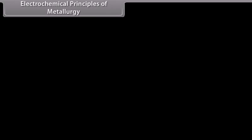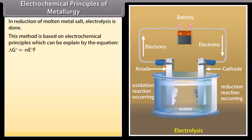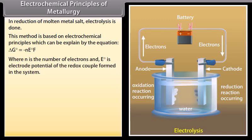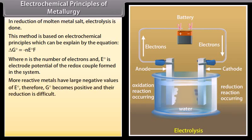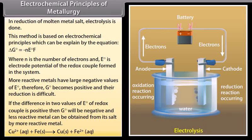Electrochemical principles of metallurgy. In reduction of molten metal salt, electrolysis is done. This method is based on electrochemical principles which can be explained by the equation ΔG° = -nE°F, where n is the number of electrons and E° is electrode potential of the redox couple formed in the system. More reactive metals have large negative values of E°. Therefore, G° becomes positive and their reduction is difficult. If the difference in two values of E° of redox couple is positive, then G° will be negative and less reactive metal can be obtained from its salt by more reactive metal.